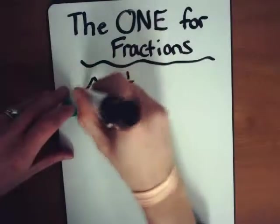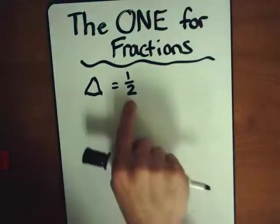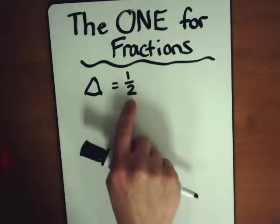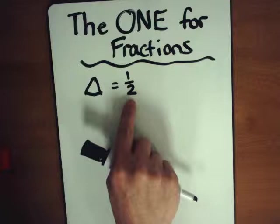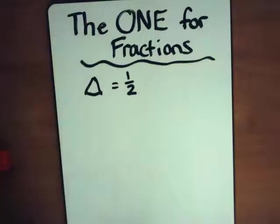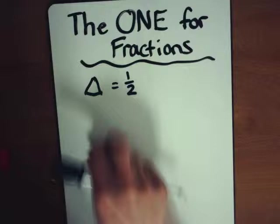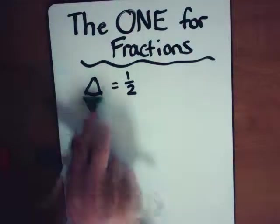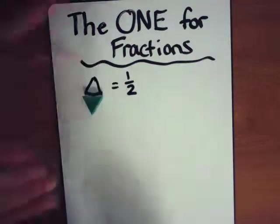One triangle is the half. We know that a whole is broken up into how many pieces? Two. So here's one half. How many halves do we need to make a whole? Two. So our whole, then, would be a rhombus.